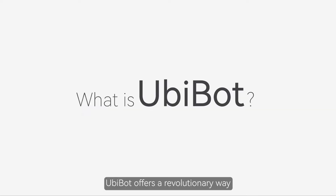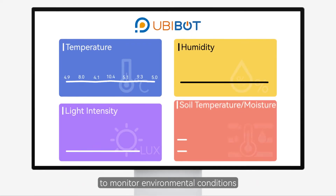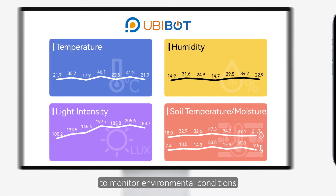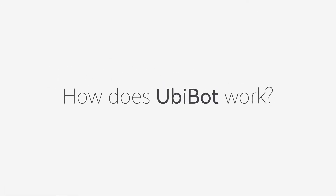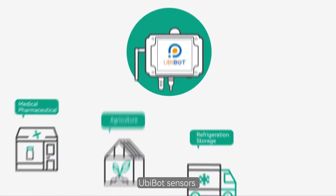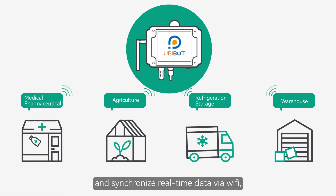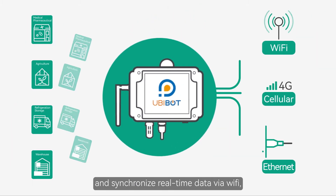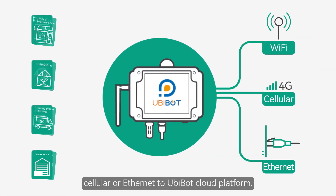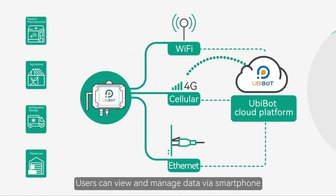What is UbiBot? UbiBot offers a revolutionary way to monitor environmental conditions where they matter. UbiBot sensors detect environmental measurements and synchronize real-time data via Wi-Fi, cellular, or Ethernet to the UbiBot cloud platform.